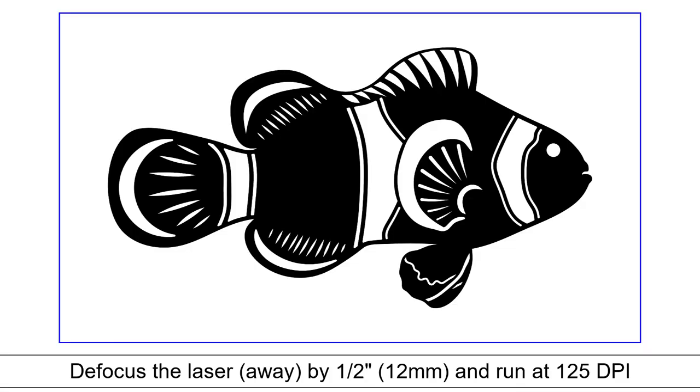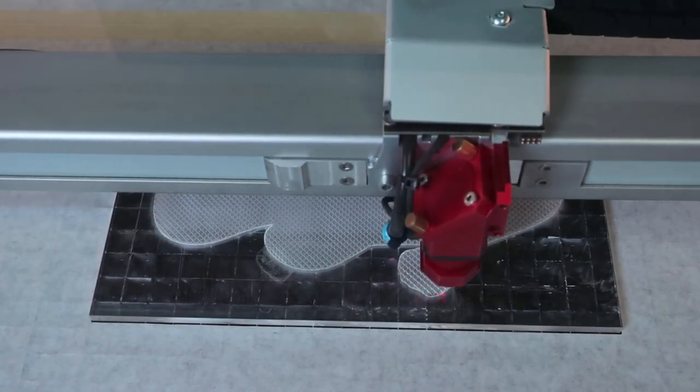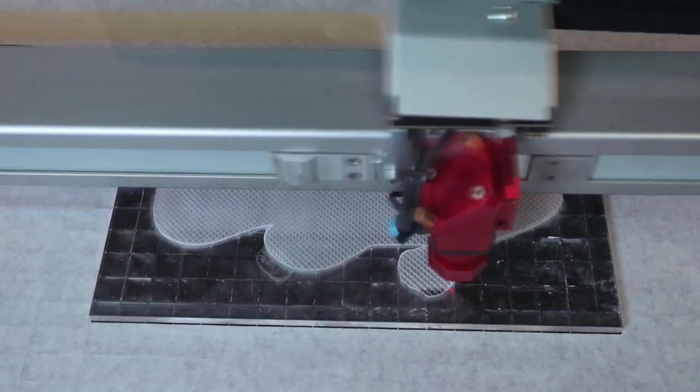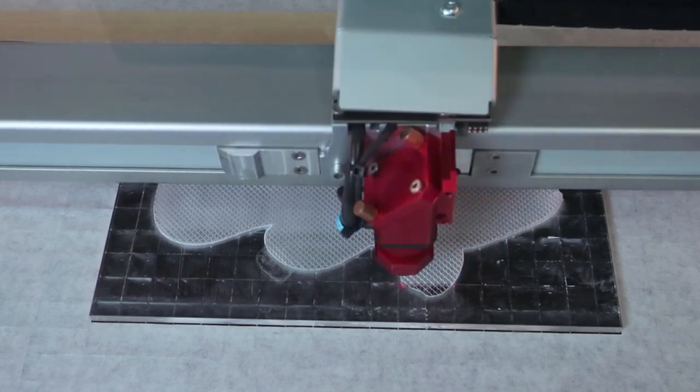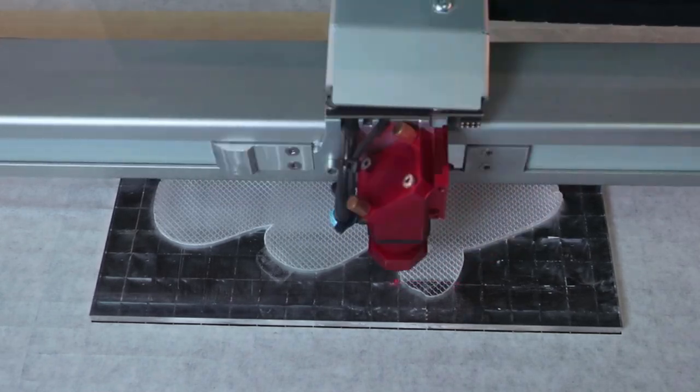Now for the laser hack. The laser will engrave this final file design using standard acrylic laser parameters with two changes. The laser needs to be taken out of focus by one half an inch away from the material, and the engraving DPI needs to be changed to 125 DPI. Once that is done, run the black design file.